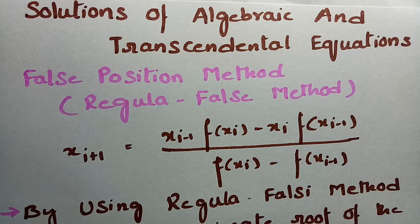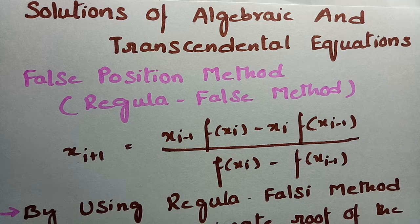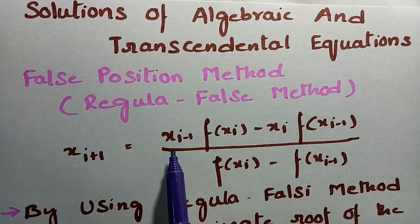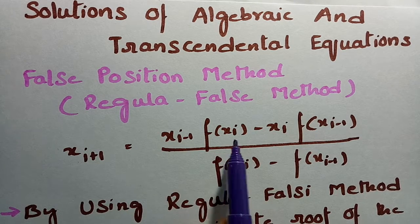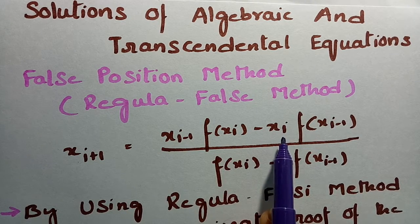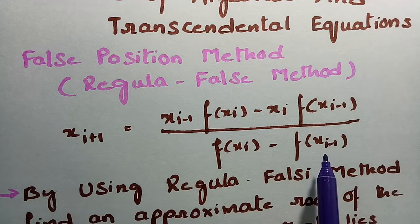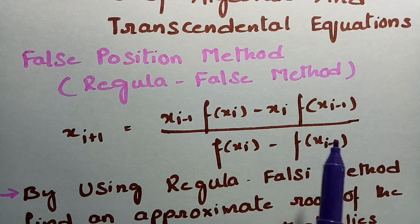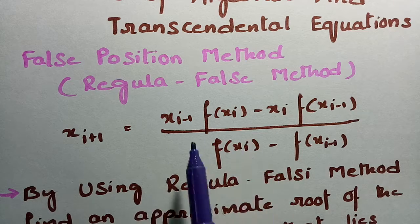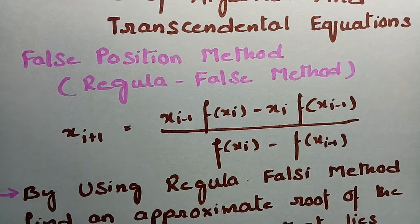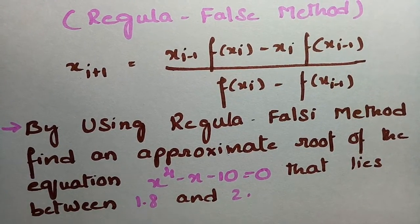This technique will work magically for you if you follow the video right till the end. Here is the problem related to the false position method, or Regula Falsi method. The formula is x_(i+1) = x_(i-1) * f(x_i) - x_i * f(x_(i-1)) / (f(x_i) - f(x_(i-1))). There is a technique to remember this and I'll tell you how while solving the problem.